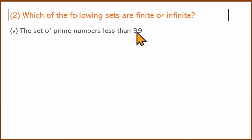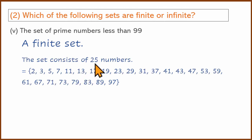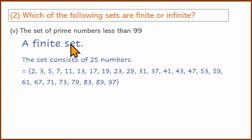Set of prime numbers less than 99. There are 25 prime numbers below 100. This is a finite set. If you check the prime numbers, there are 25 prime numbers up to 100: 2, 3, 5, 7... So this is 25 elements. Finite set means the number of entries can be counted. The maximum here is less than 99, so this is a finite set.